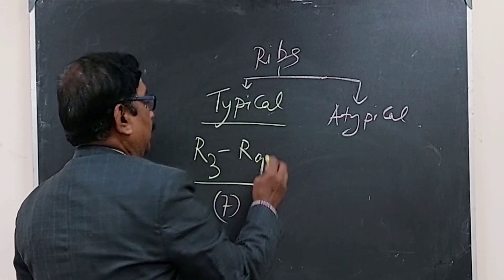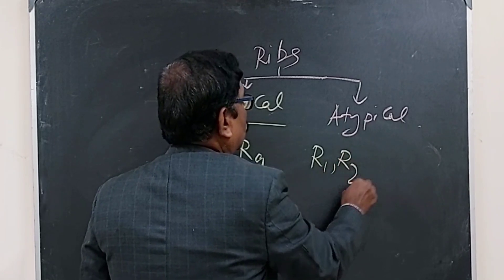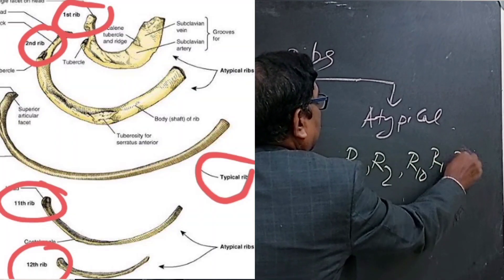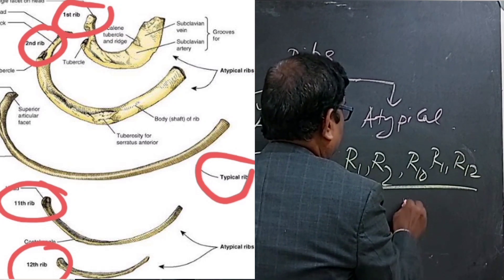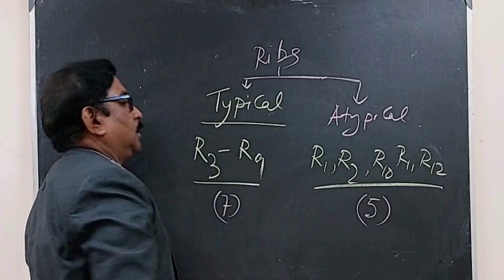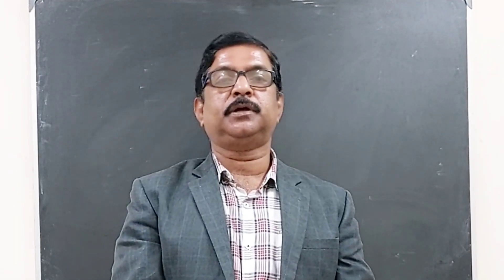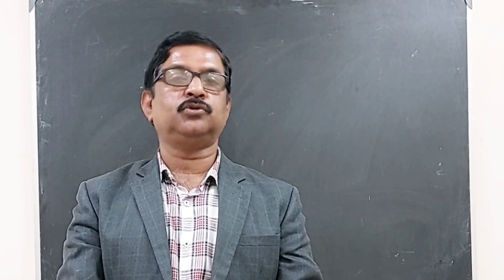And remaining 5 ribs like rib 1, rib 2, rib 10, rib 11 and rib number 12 - these 5 ribs are atypical ribs because their anatomical features are different. The atypical ribs are rib number 1, rib number 2, then 10, 11 and 12. And from examination point of view, rib number 1 is most important.